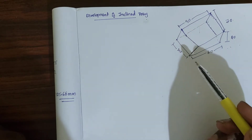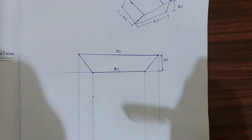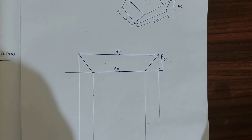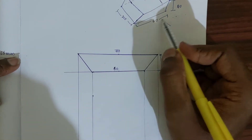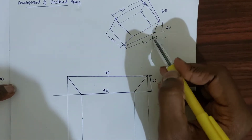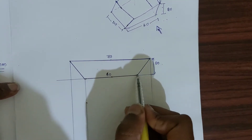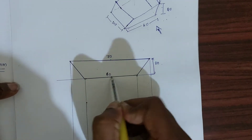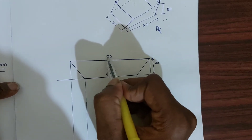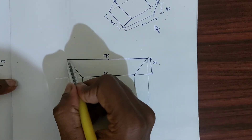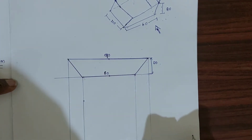Before starting the development, we need to draw the front view and top view of the inclined tray. Viewing from the front: the width is 60mm and height is 20mm, with the top width being 90mm. Take a center point, draw a 60mm line, then draw a height of 20mm from the center. Mark 45mm each side from center for the 90mm top width, then join with an inclined line to complete the front view.